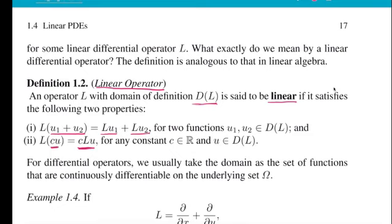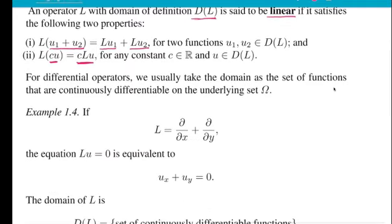So here is an example. For example, the partial first derivative ∂/∂x plus ∂/∂y. This is a linear operator because if I do L(u + v), then this would be ∂/∂x of (u + v) plus ∂/∂y of (u + v).